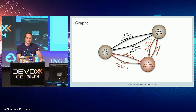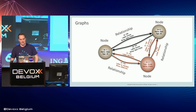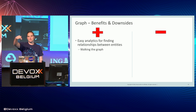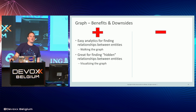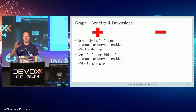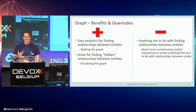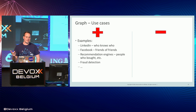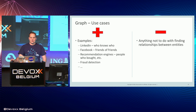Last is graphs. Here we have nodes and relationships between nodes that allow us to figure out how different entities are related. Benefits: really easy to find those relationships — it's like walking the graph. We know it from LinkedIn: I know that person over this person. Also really easy to find hidden relationships by visualizing the graph. We are all attending DevFox Belgium, so we would find that connection very easily by visualizing the graph. Downside: pretty much anything that's not about finding relationships between entities is cumbersome or impractical to model in graphs — don't do financial transactions in graphs, for example.